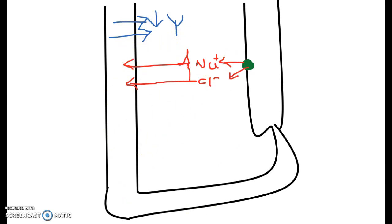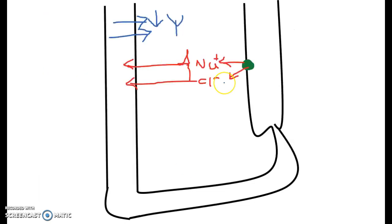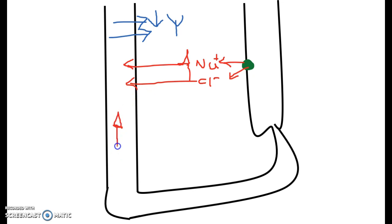However, the question says that a salty diet leads to the production of less urine. If we have a salty diet, that implies that we have more sodium and chloride ions entering the descending limb. Compared to before, we now have even more sodium and chloride ions inside, so the concentration starts to increase even more than before.